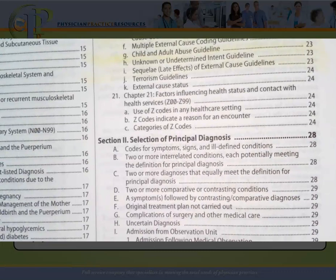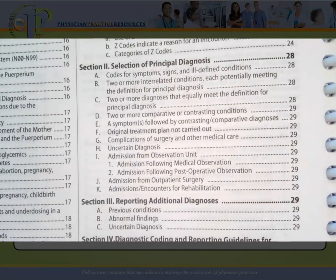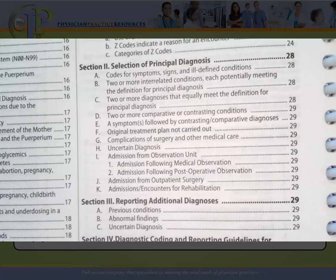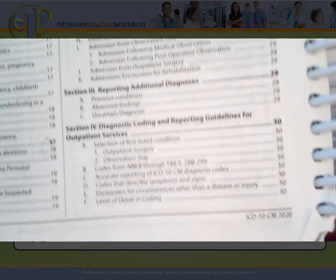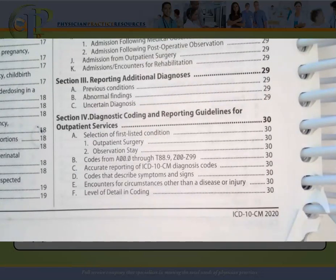Section two is for selection of principal diagnoses, and then section three is for reporting additional diagnoses. Of note, if you're taking the CPC credential, you actually do not need to read sections two and three. Sections two and three are only for those taking the CIC credential offered through the AAPC, or the CCS credential offered through AHIMA. Section four covers the diagnostic and coding reporting guidelines for outpatient services, and if you're taking all exams, you definitely need to read section four.